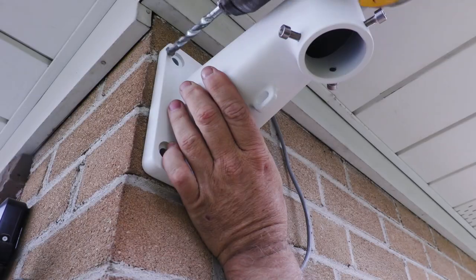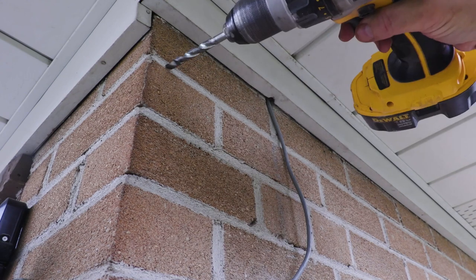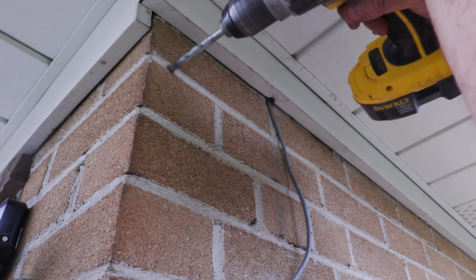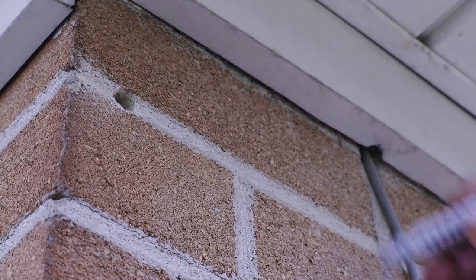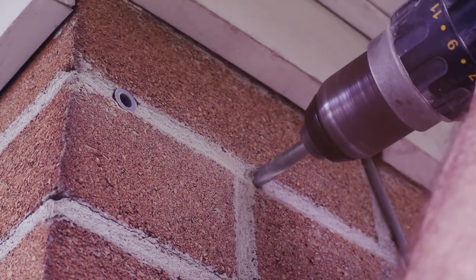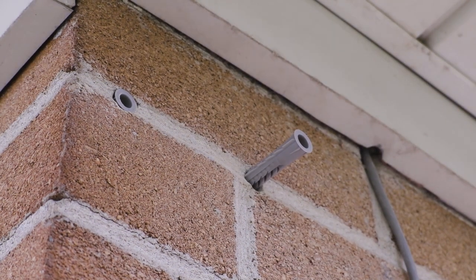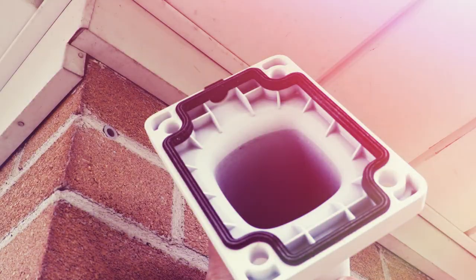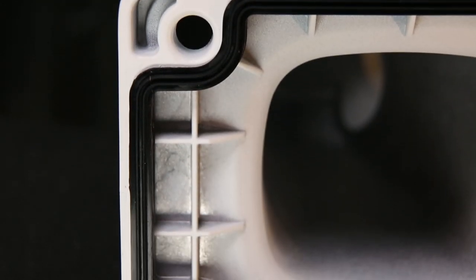Place the mount on the wall and drill holes for the mount. Insert the supplied plastic anchors into the holes. Prior to installing the mount on the wall, you should attach the black silicone gasket around the inner edge of the mount.